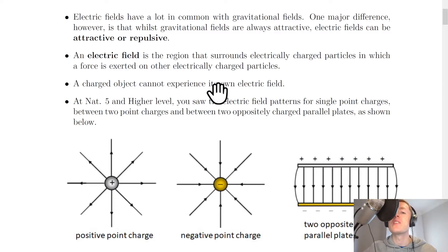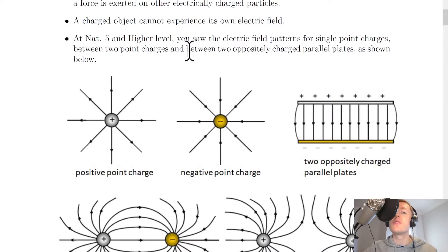However, a charged object cannot experience its own electric field. It can only experience the electric field due to another charge near it. In Nat 5 and Higher level, you saw the electric field patterns for single point charges, between two point charges, and between two oppositely charged parallel plates, as shown below.